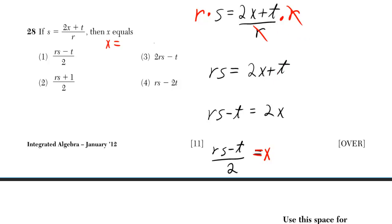How do I get rid of the plus t, so I'm only left with 2x? Well, I can do the opposite of a plus t. I can do a minus t. And now the t's cancel, and rs minus t, they're not like terms, so I just leave it as rs minus t.